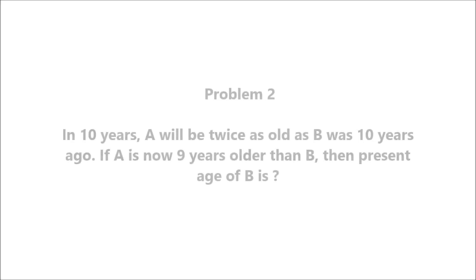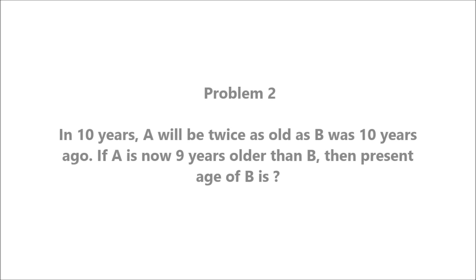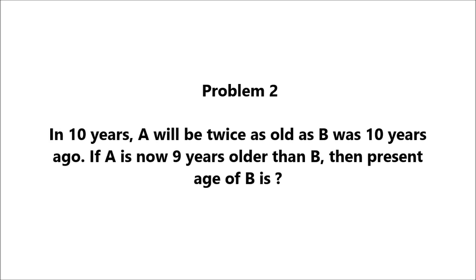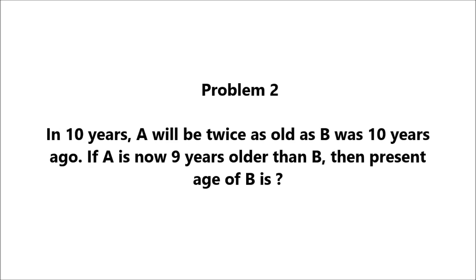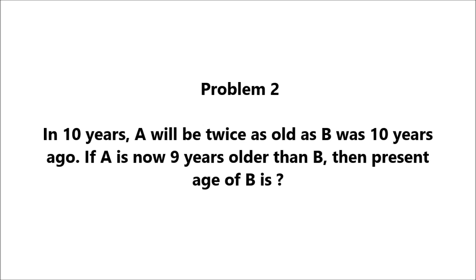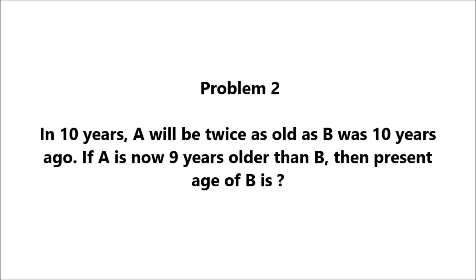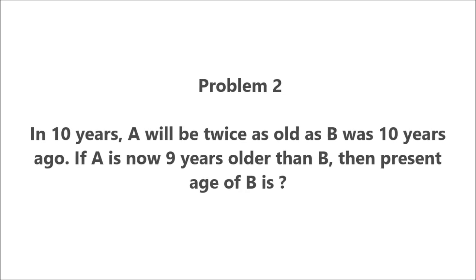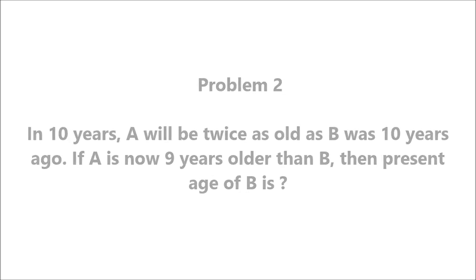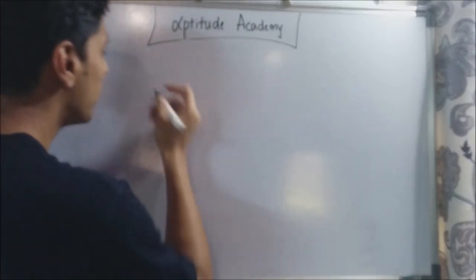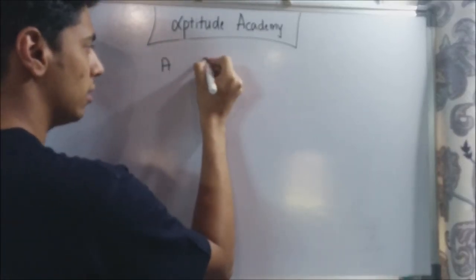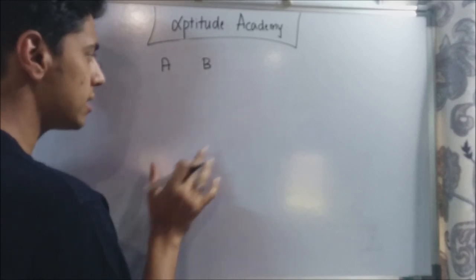Problem two: In 10 years, A will be twice as old as B was 10 years ago. If A is now nine years older than B, then what is the present age of B?